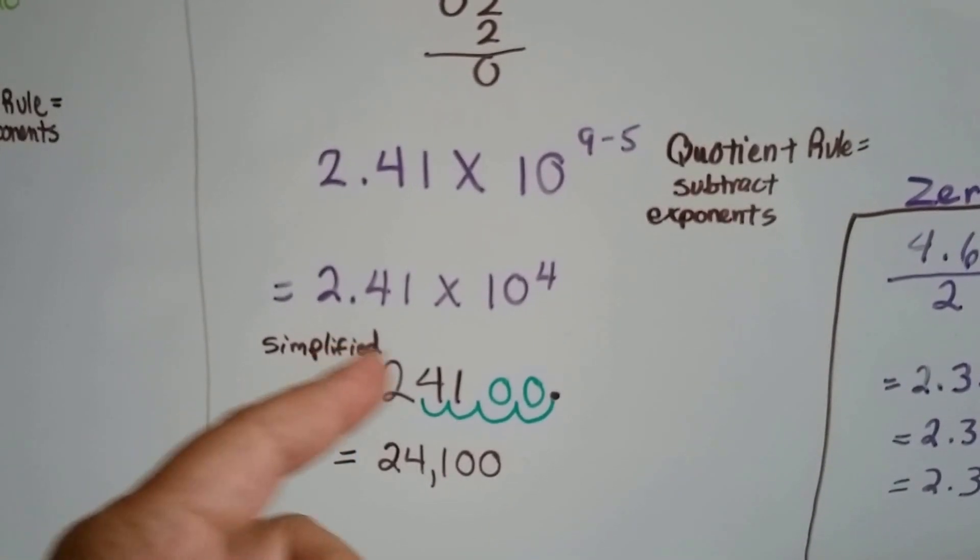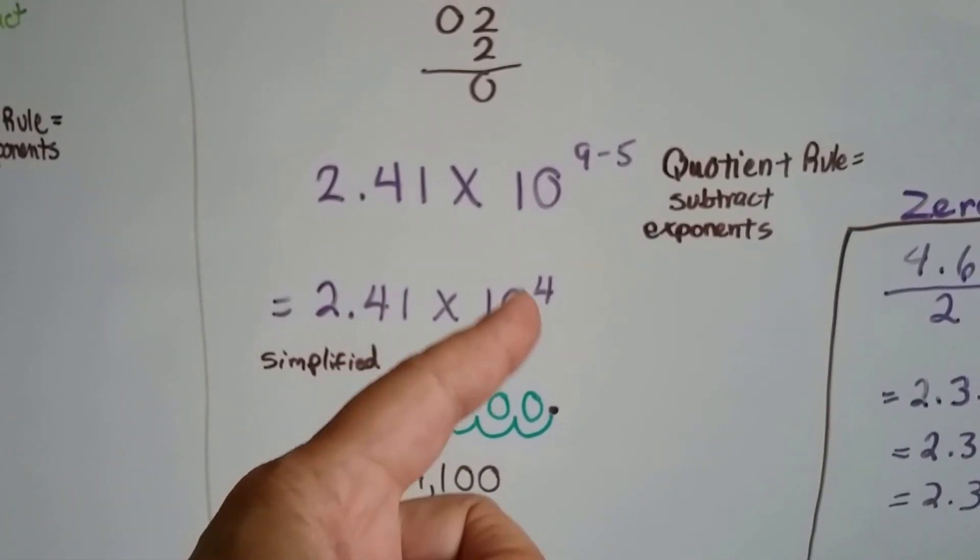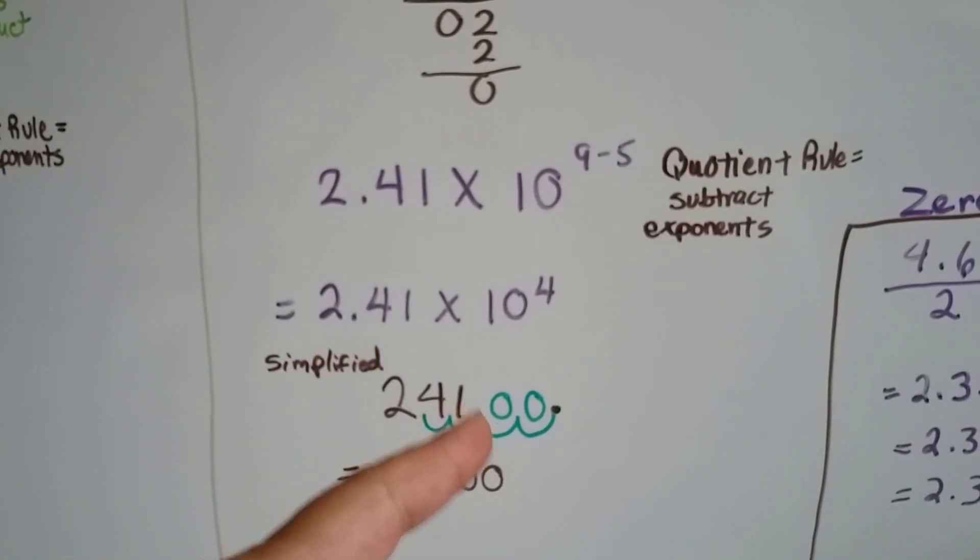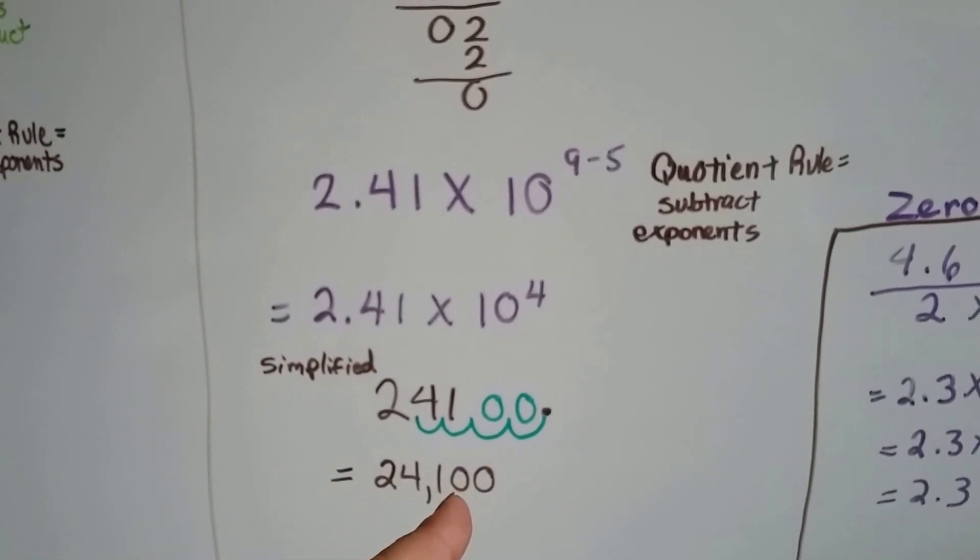If we have to simplify it, we move that decimal point over 4 hops, because that's the exponent by the 10. And, we go 1, 2, 3, 4, and we get 24,100.